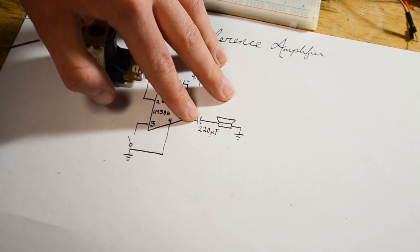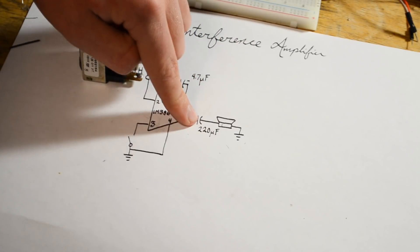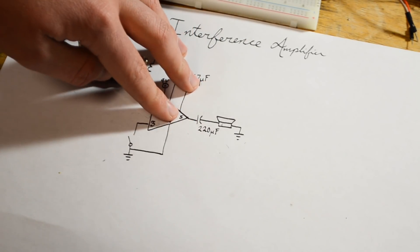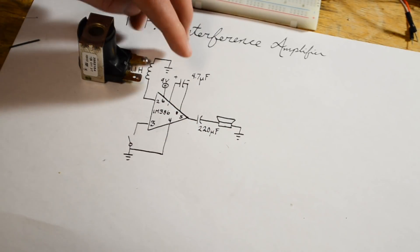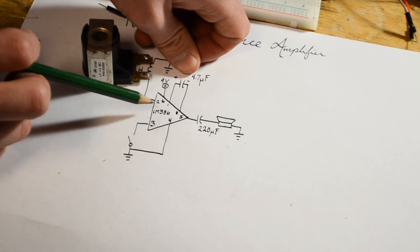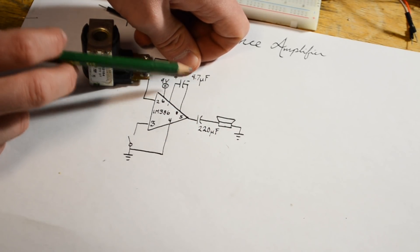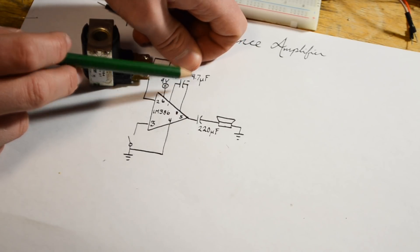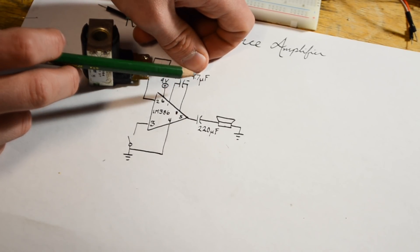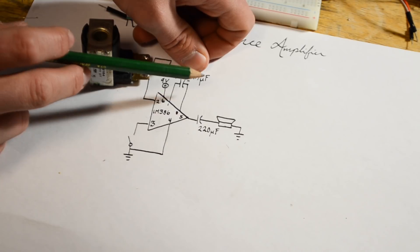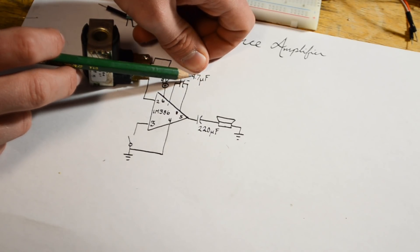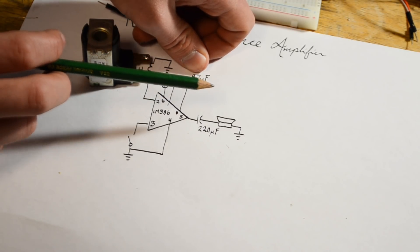This capacitor here is basically to take out all the DC voltages coming from this op amp, so that way the speaker only sees clean AC voltages. This capacitor right here basically sets the gain of the op amp. If there is no capacitor right here the gain will be about 20. If there is a 10 microfarad capacitor the gain will be about 100. Now we are using a 4.7 microfarad capacitor right here and that seems to do the trick.